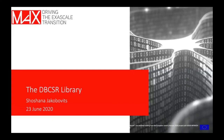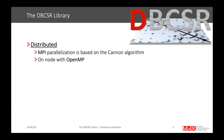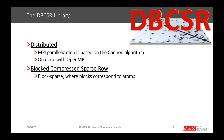Hi everyone, my name is Shoshana Jacobovitz. I am a software engineer at CSCS working in Anton's scientific software and libraries team. My work over the last two years has focused on the DBCSR library, specifically its GPU backend. DBCSR stands for Distributed Blocked Compressed Sparse Row. The D stands for distributed — MPI parallelization based on the Cannon algorithm — and there is also on-node parallelization with OpenMP. BCSR stands for Blocked Compressed Sparse Row, the format used to represent sparse matrices.